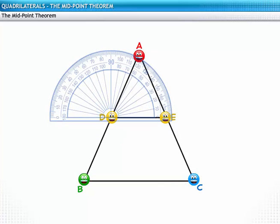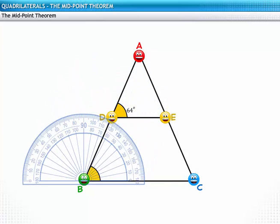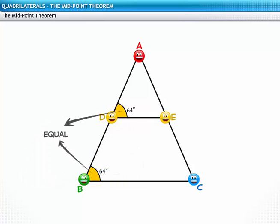Measure angle ADE and angle ABC. They are equal. This implies that the corresponding angles formed by the lines BC and DE with the transversal AB are equal. Thus, DE is parallel to BC.